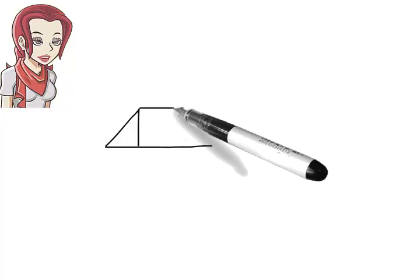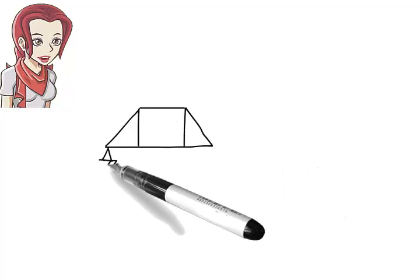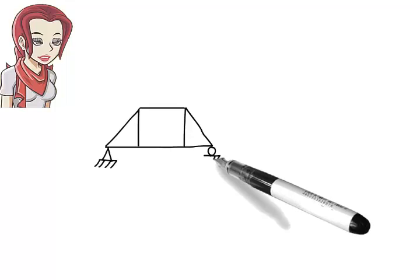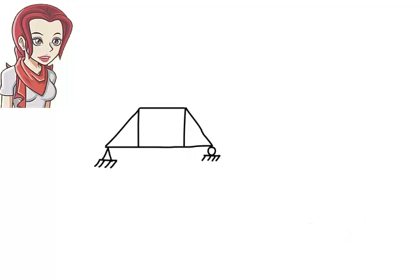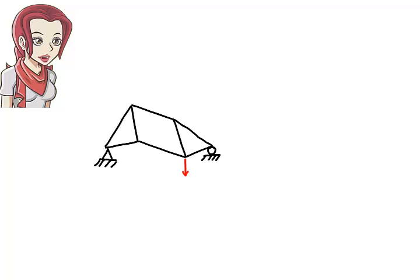Here, we have a truss structure that rests on two supports, a pin and a roller. Clearly, the supports prevent any rigid body movement of the entire structure. Yet, the truss is considered to be unstable. Why? Because here, we have localized rigid body motion. Some of the truss members are not properly restrained. They can have limited free movement. This is called internal instability.